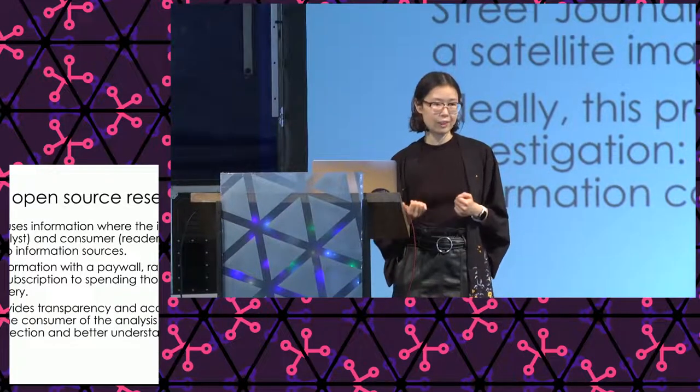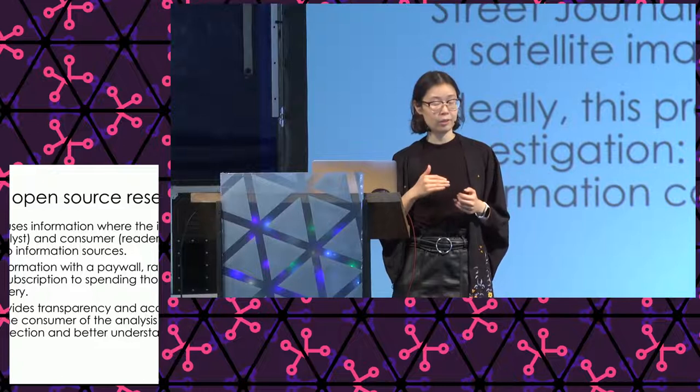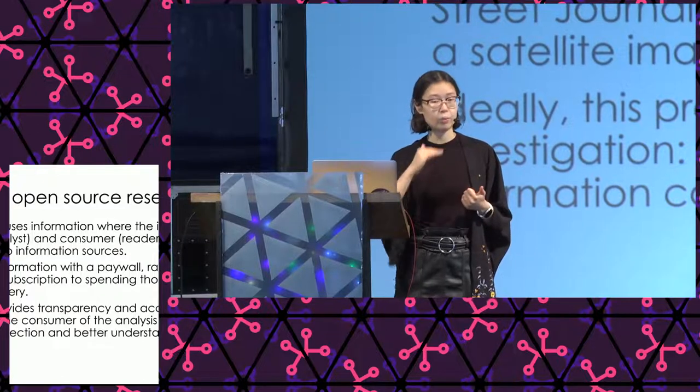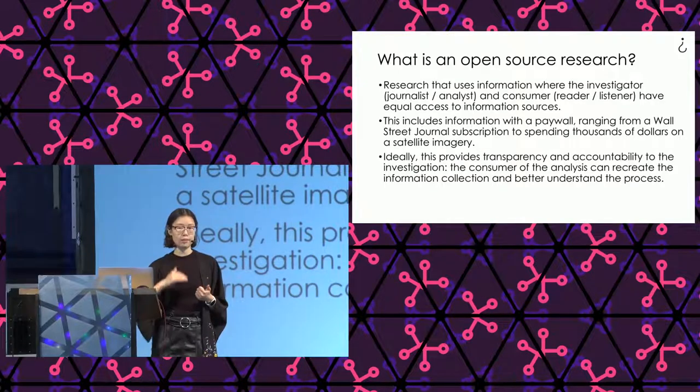Why is this important? When Bellingcat launched in 2014, to build trust among readers, our founder decided to do everything open source. Readers could look at each step and confirm it's trustworthy information — they don't have to take our word for an investigation. The great thing about open source is that it provides transparency and accountability. In an ideal world, the reader will be able to do the same investigation.